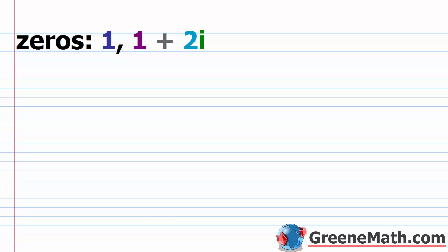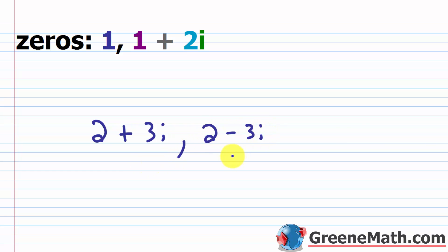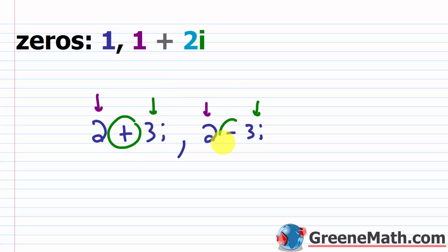So if I had something like 2 plus 3i and that was a zero, well then it would also be true that 2 minus 3i would be a zero. Remember, for conjugates, the real part stays the same — you have 2 and 2 — and the imaginary part stays the same, so you have 3i and 3i. It's just that the signs are different: plus and then minus.